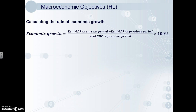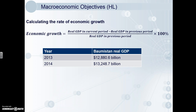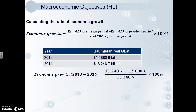Calculating the rate of economic growth. All we need are the real GDP figures for the two years — you may have to calculate these, but you've already learnt how in 2.1. The equation is: real GDP in the current period minus real GDP in the previous period, over real GDP in the previous period, times 100 to get the percentage. Here we have the real GDP figures for Bornistan in 2013 and 2014. Plug the numbers in, show your working, and remember to include the percentage sign — without it you won't get your full marks. This comes out to 2.86%.